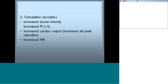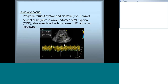The ductus venosus is opened in the subcostal SPC-IVC view, where turbulent flow close to the right atrium is visible. Ductus venosus Doppler normally shows prograde systolic and diastolic flow. If the A wave is negative, it indicates congestive cardiac failure and sometimes also an abnormal karyotype. The ductus venosus waveform is similar to venous flow but has only prograde flow — no negative A wave.